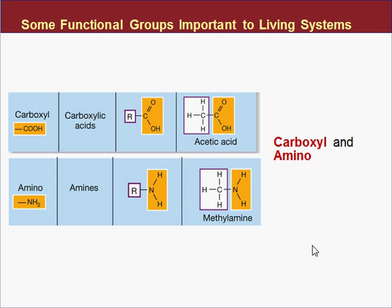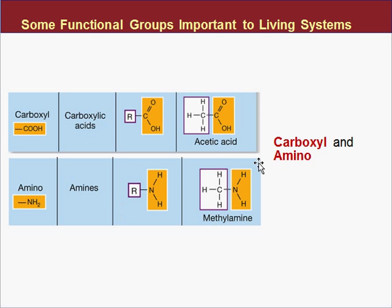The next two functional groups are important because we'll find both in proteins. The first is the carboxyl group, COOH, forming a carboxylic acid — a carbon double-bonded to an oxygen and also bound to a hydroxyl (OH). The second is amino, or amine. Amino, amine, and ammonia all point to nitrogen — this is the only functional group with nitrogen, and it's NH2. These appear in proteins: amino acids have both an amine group and an acid group.